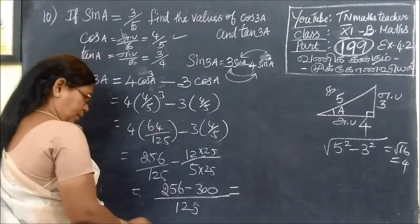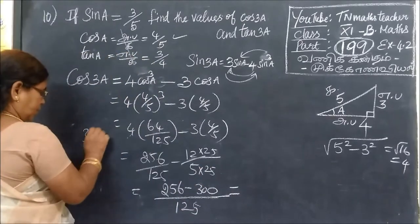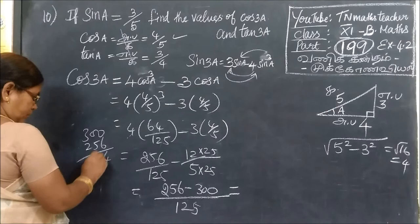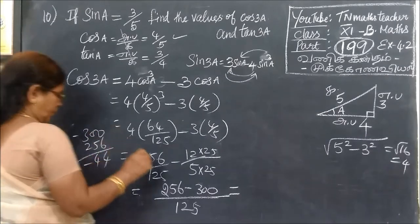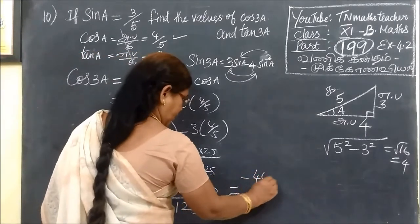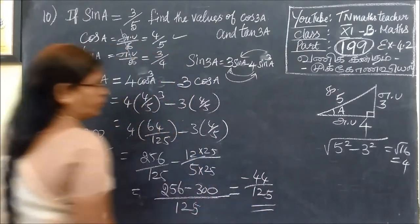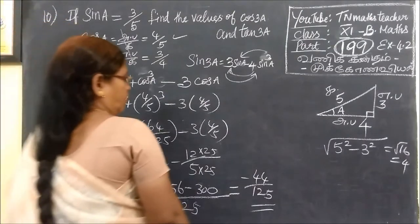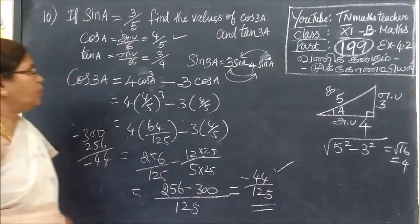So the denominator is 125, then 256 minus 300. If you want to make it equal, then 25. So the value is 125. Then 25. So the value is 45, then 24. The greater number — 7 is minus 7. So minus 44 by 125. The answer: minus 44 by 125.